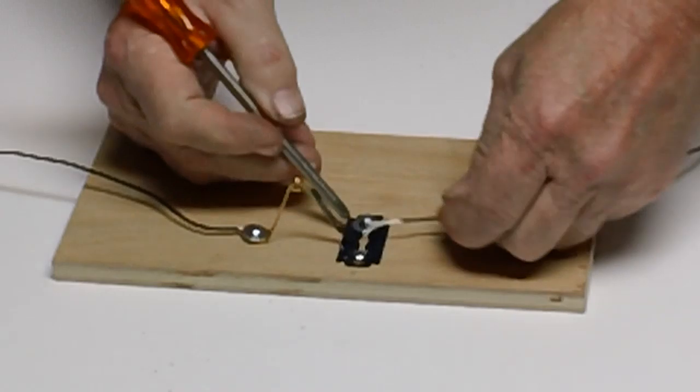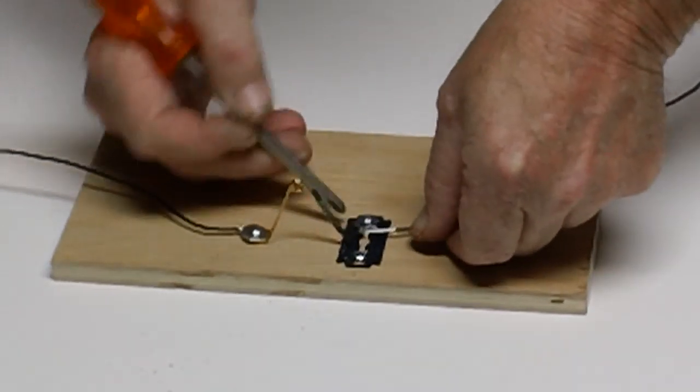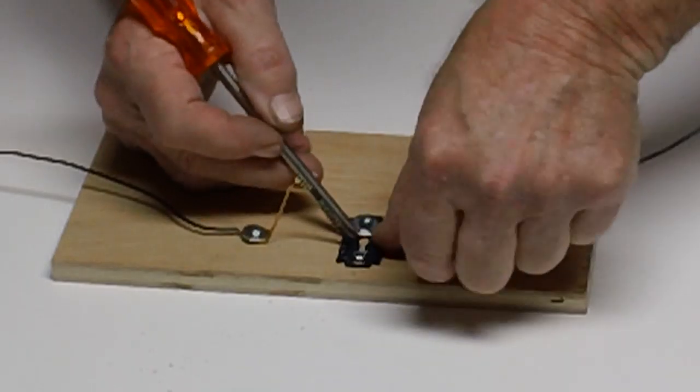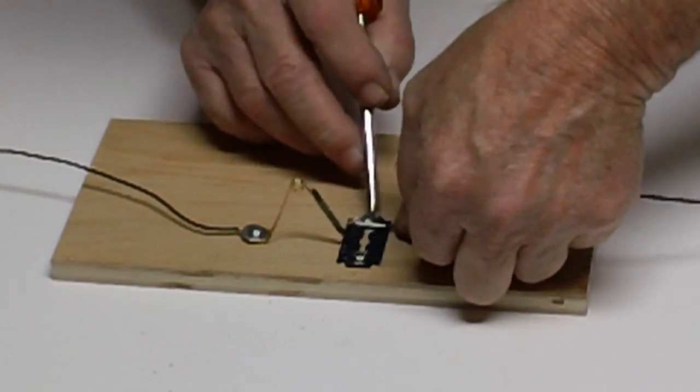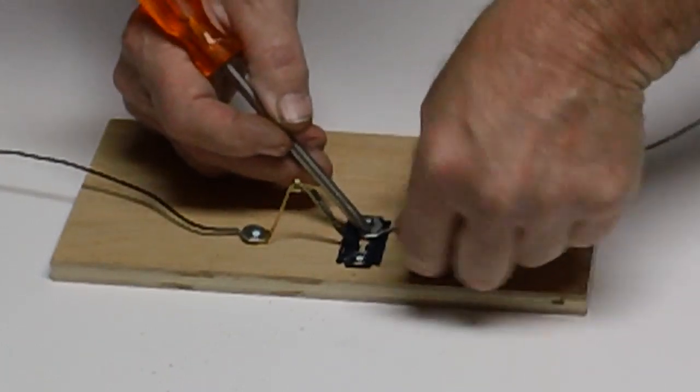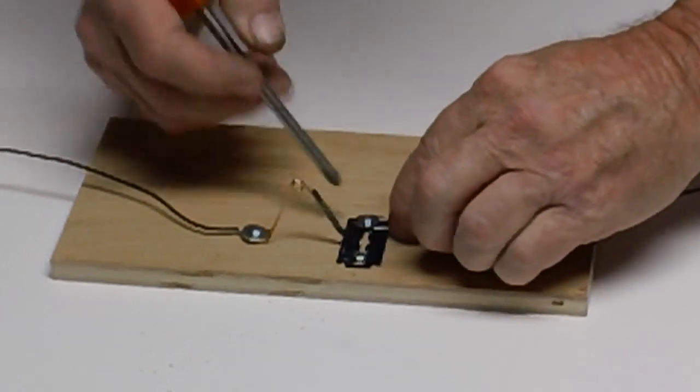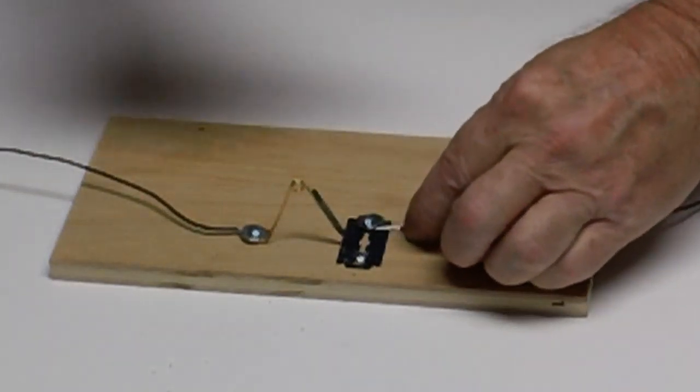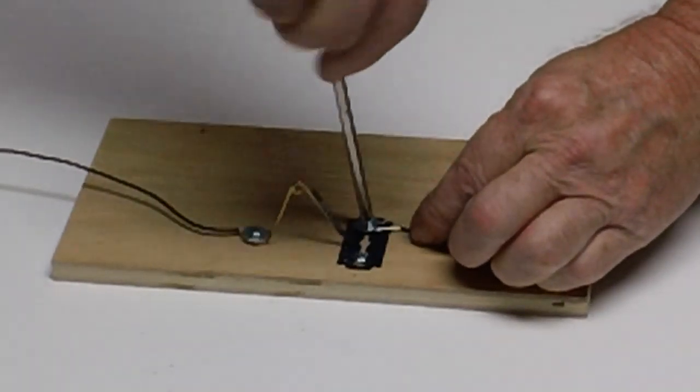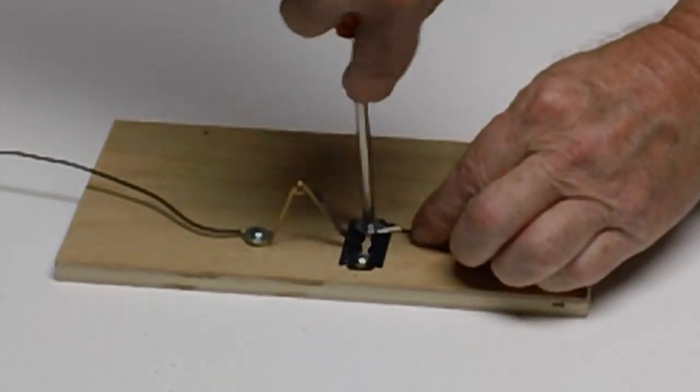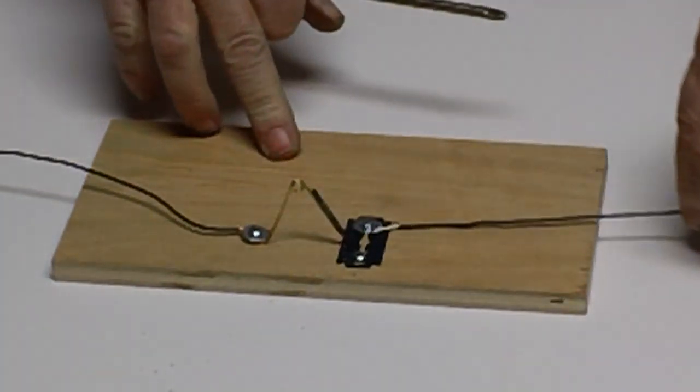And take and use yourself a screwdriver or something, kind of raise the washer up to where you can get the wire underneath. Sometimes this is a fun trick. We got it underneath there. Good. Okay. Now, this will be the one going to the coil and antenna on this side. Okay.